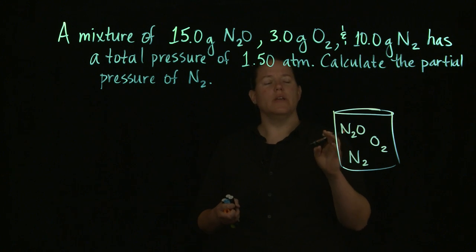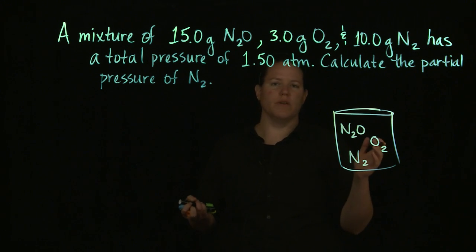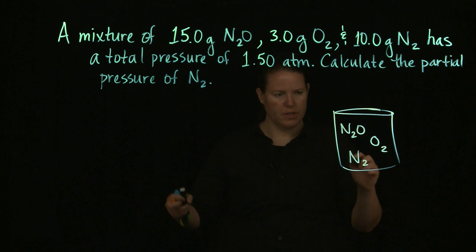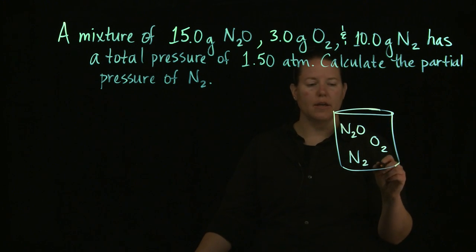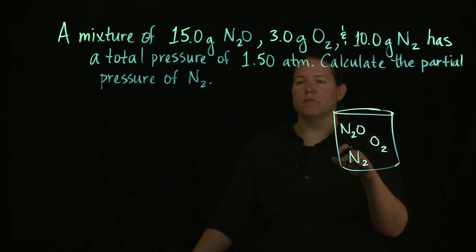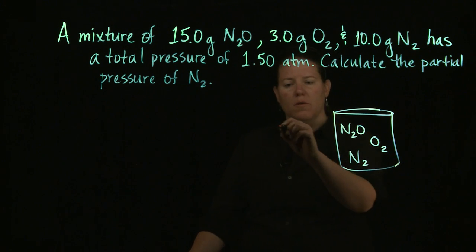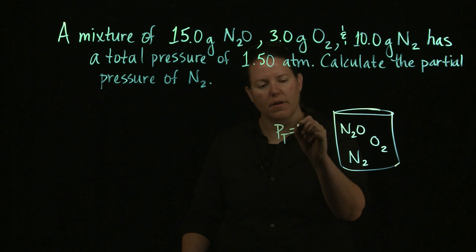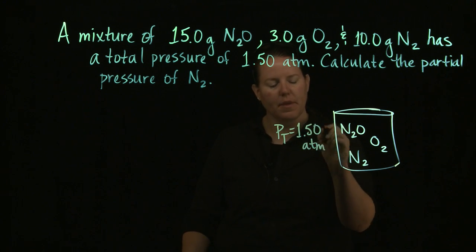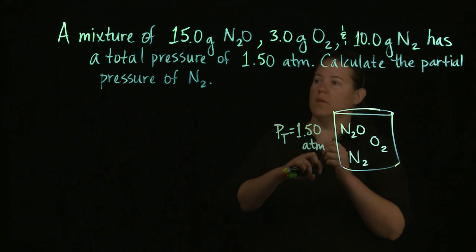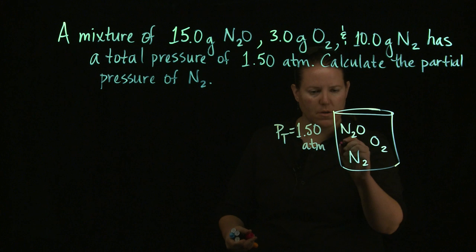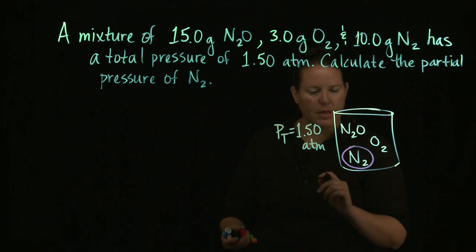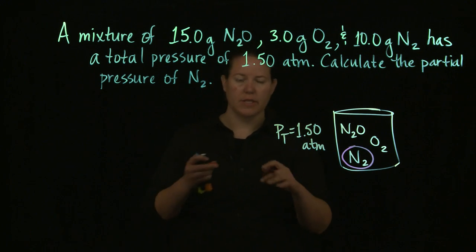Okay, and these three gases are in the container. The container is, we don't know how big the container is, we weren't given that. So we're just assuming it's in some kind of container at some kind of temperature. And it has a total pressure, the pressure gauge measured 1.50 atm. And I want to find out what pressure N2, this particular one, N2 exerts on the container.